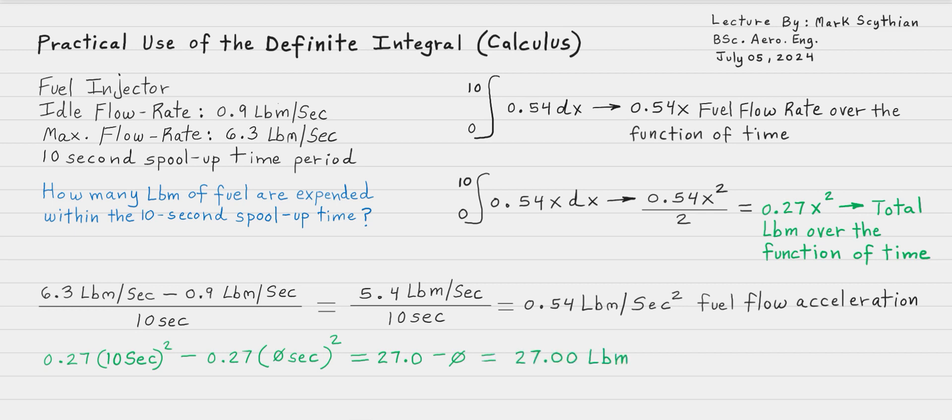27 pounds mass total fuel expenditure is the value of how many pounds of fuel are expended within the 10 seconds spool up time.